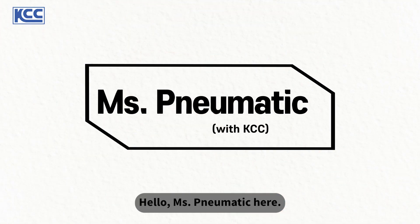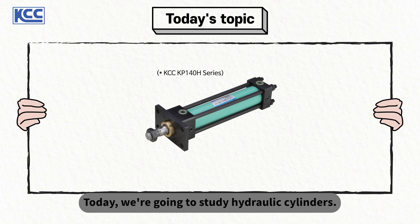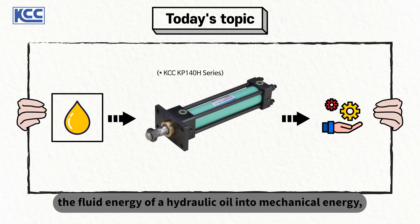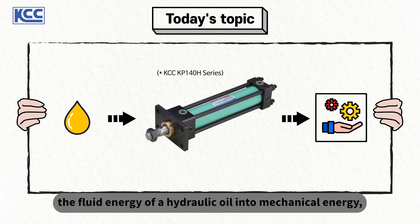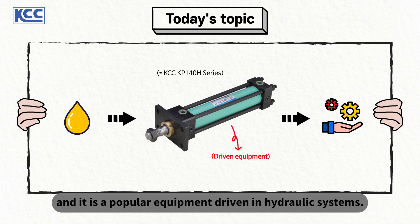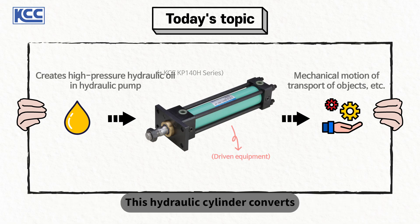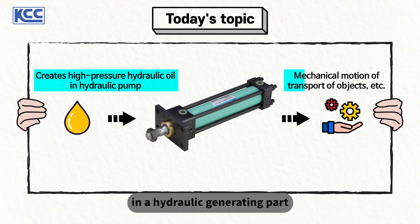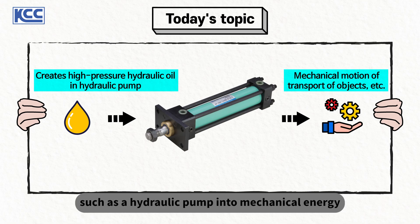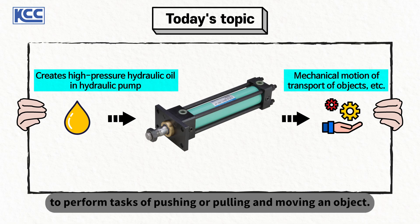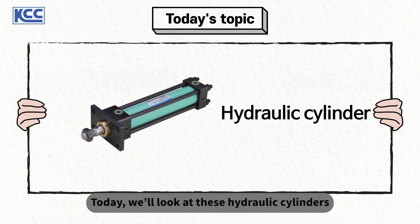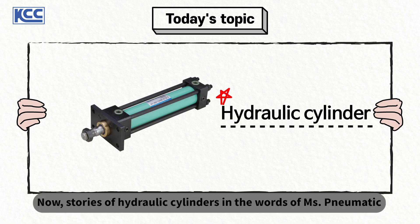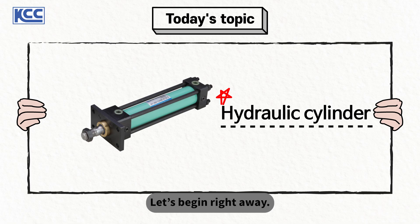Hello, Ms. Pneumatic here. Today we're going to study hydraulic cylinders. A hydraulic cylinder is a device that converts the fluid energy of a hydraulic oil into mechanical energy, and it is a popular equipment driven in hydraulic systems. This hydraulic cylinder converts the fluid energy generated in a hydraulic generating part, such as a hydraulic pump, into mechanical energy to perform tasks of pushing, pulling, and moving an object. Today, we'll look at these hydraulic cylinders and study them. Let's begin right away.